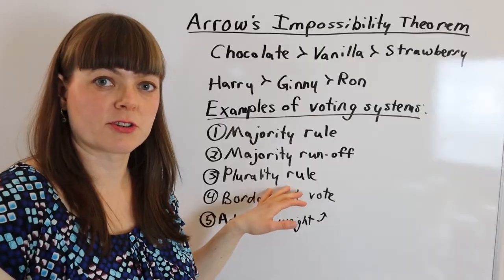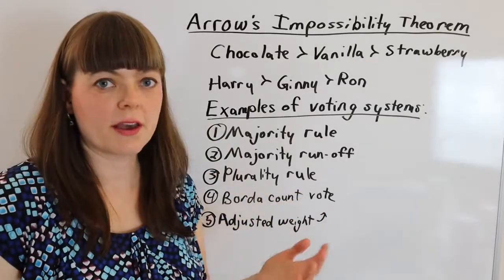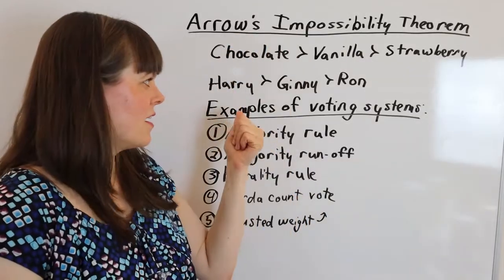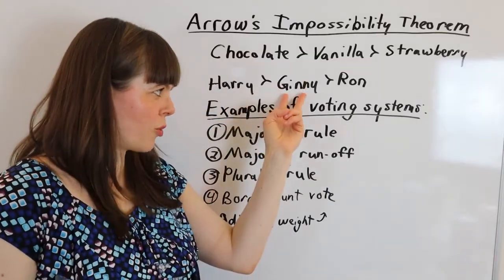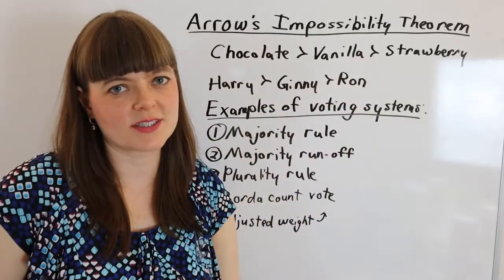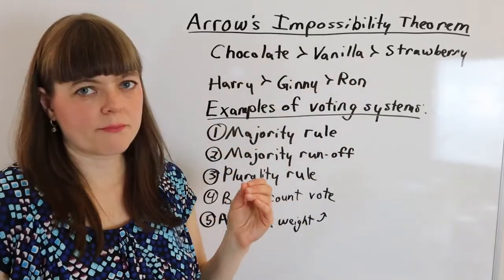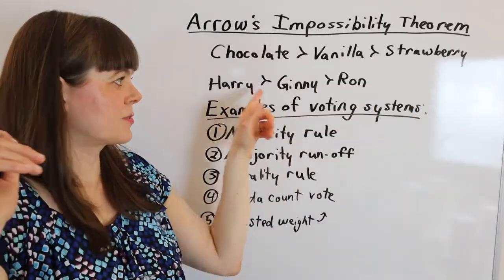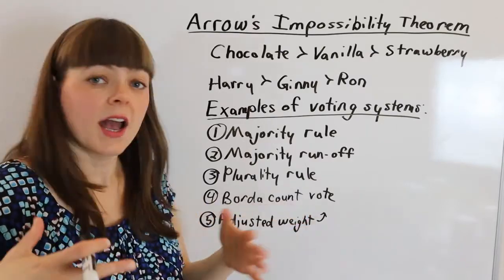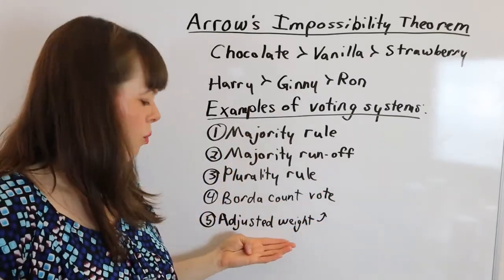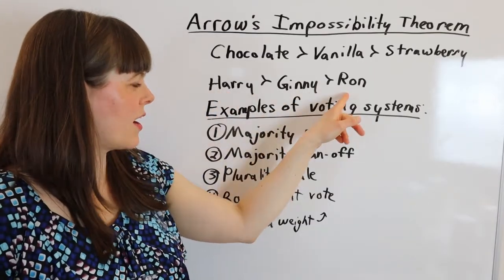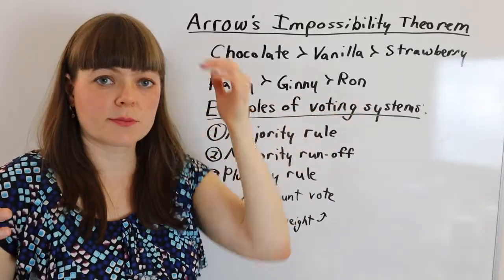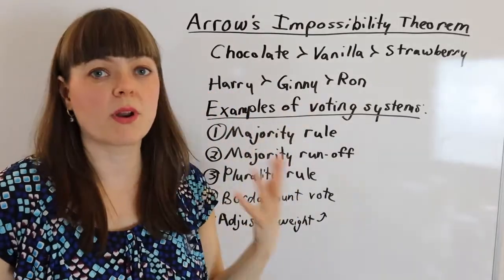A Borda count vote accounts for the strength of people's preferences. If there's three candidates, you give three points to your first candidate, two points to your second candidate, one point to your third candidate — maybe zero points to the last candidate if there's four. So people are allowed to express a full ranking with a Borda count vote. You could also use different weights, so instead of 3-2-1, you could do 6-2-1, or 6-5-1, in terms of the point allocations over people's rank orderings.